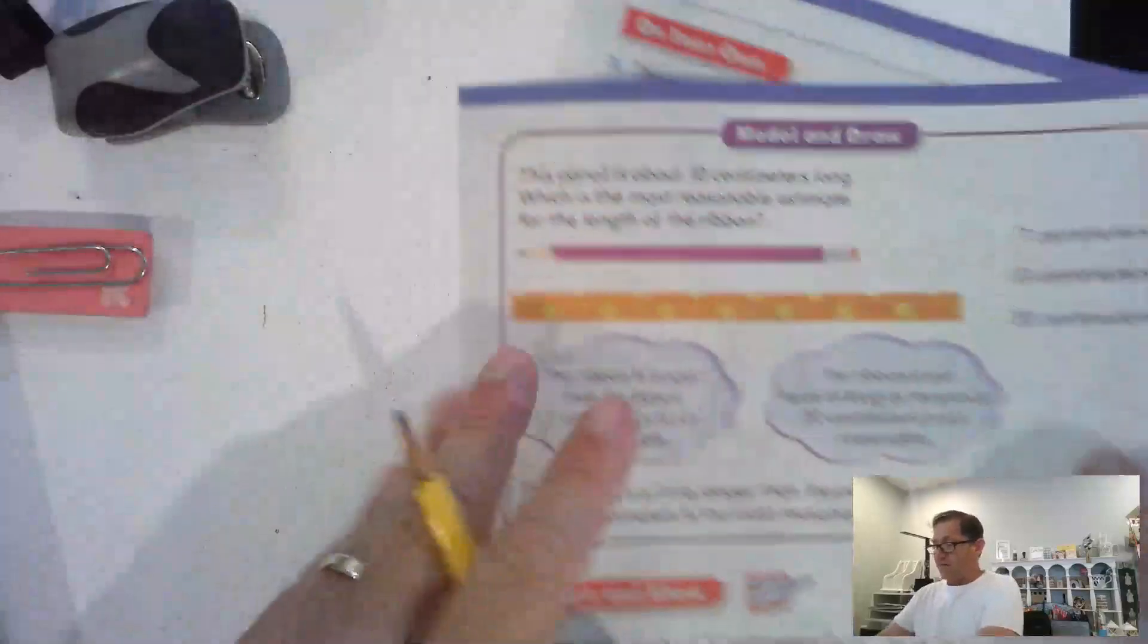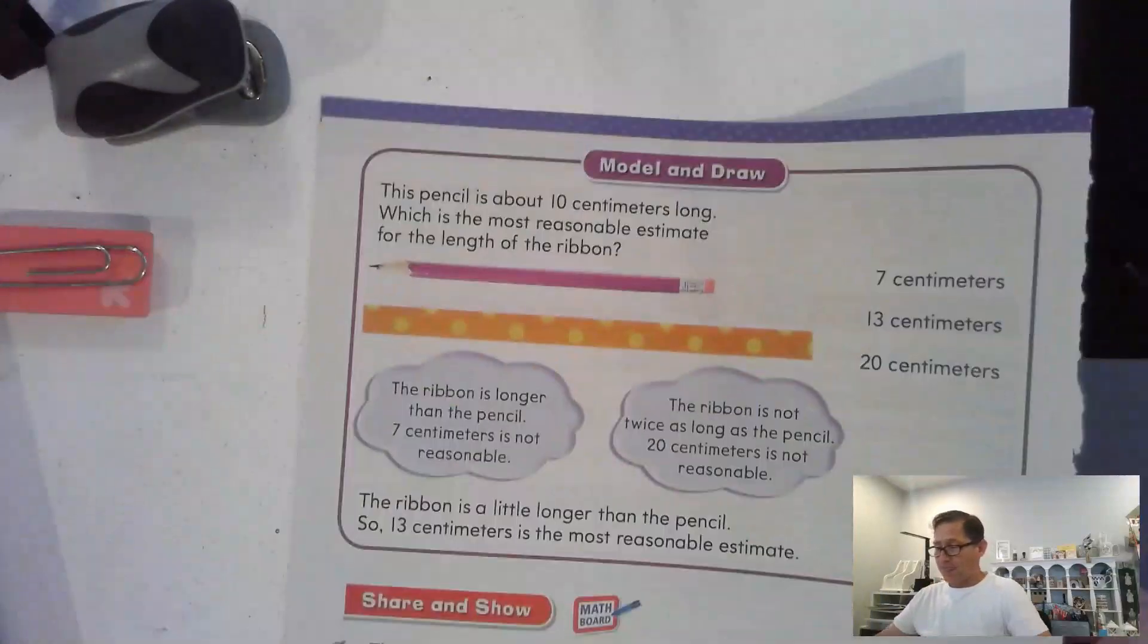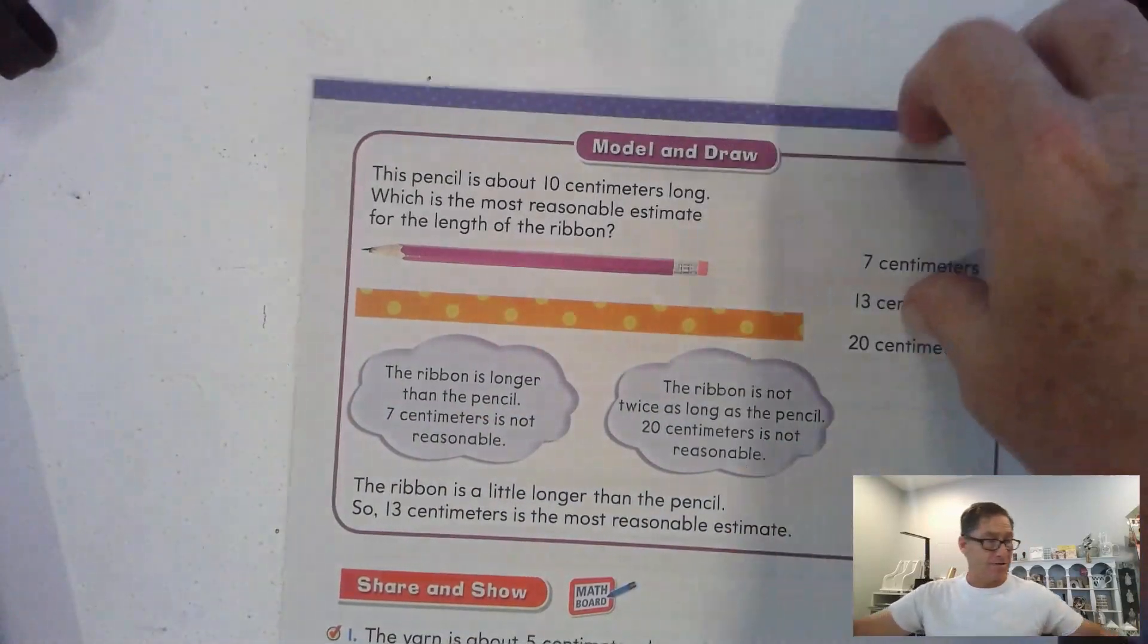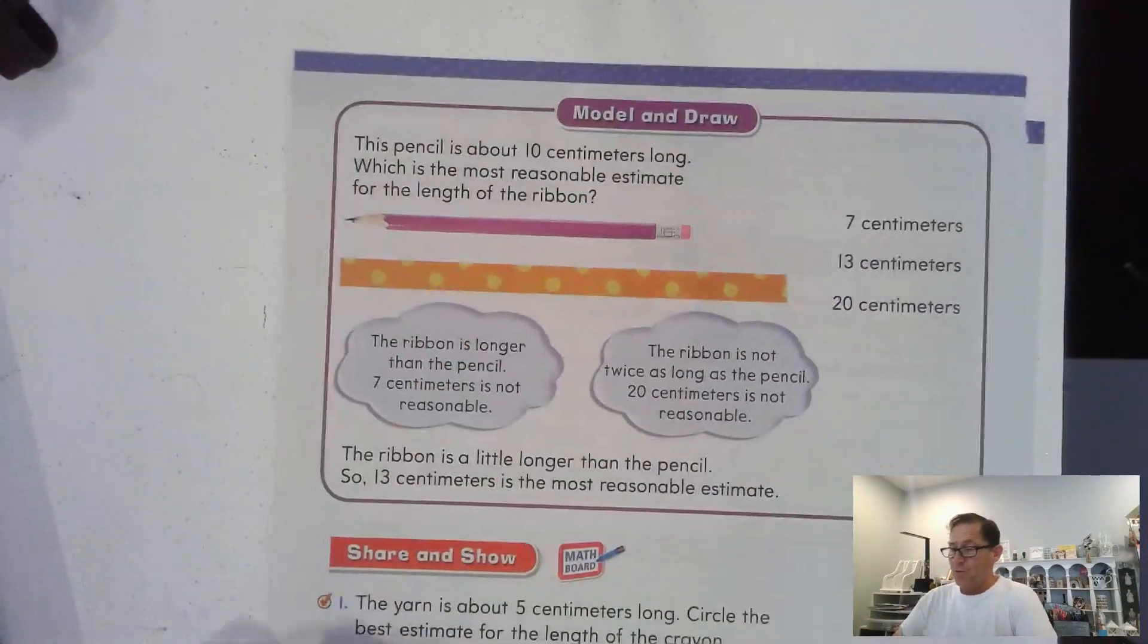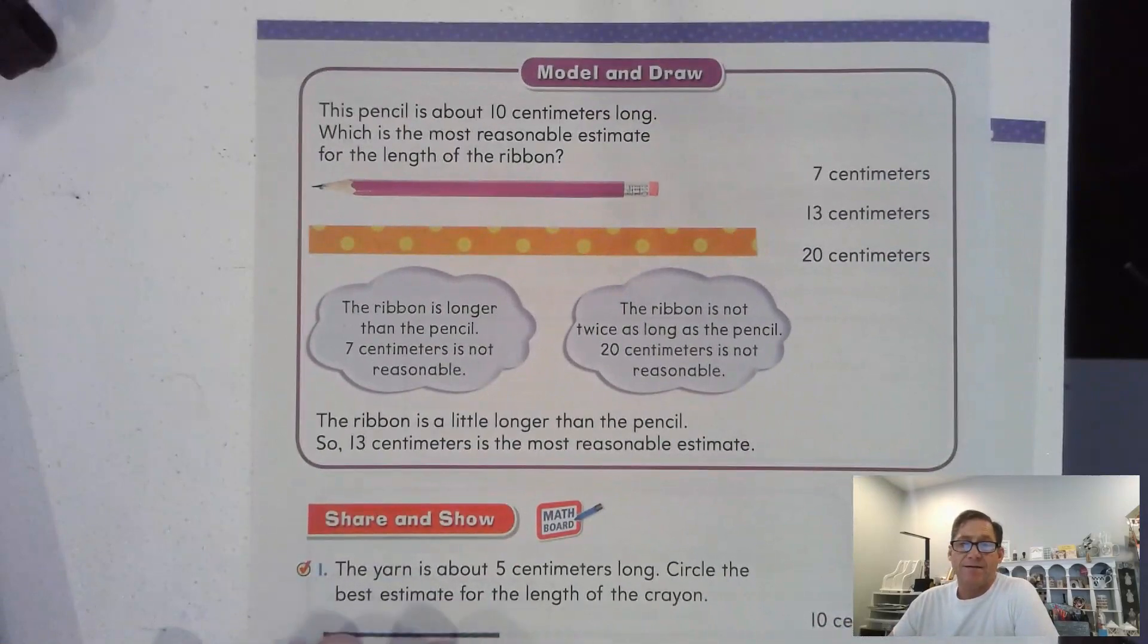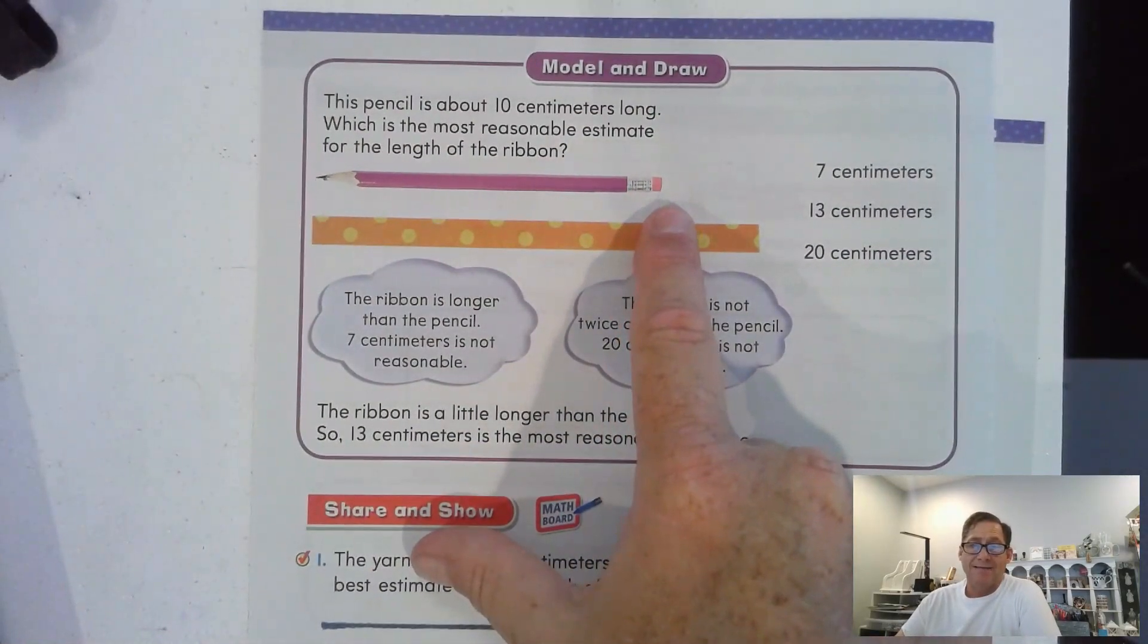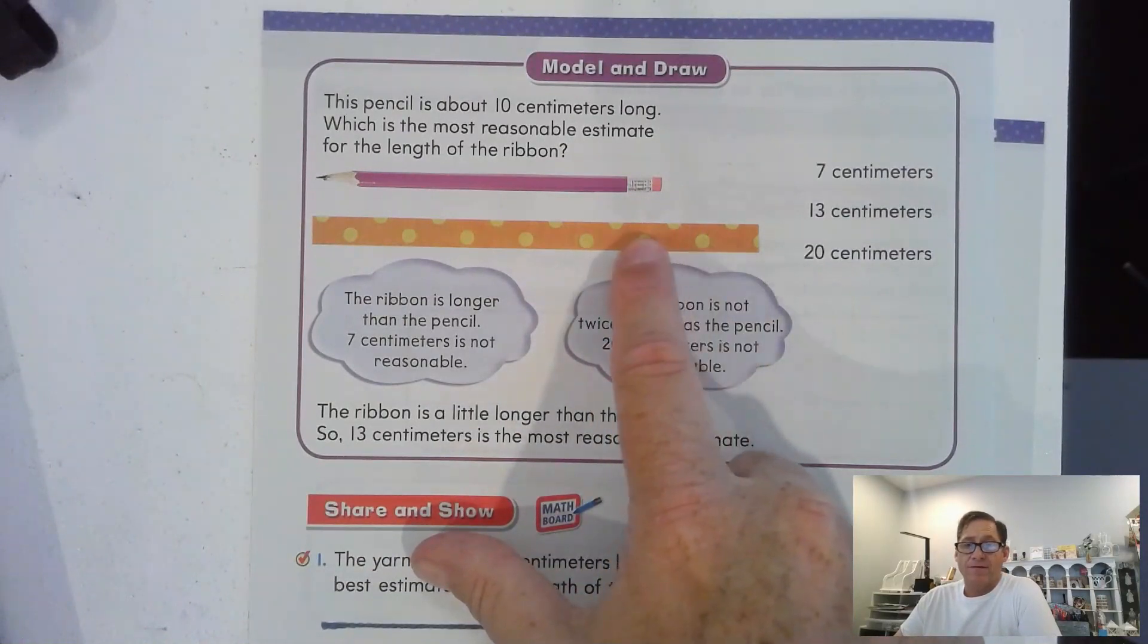So, let's go to page 450. This pencil is about 10 centimeters long. Which is the most reasonable estimate for the length of the ribbon? Okay, so if the pencil is 10, we have to figure out about how much longer this is.